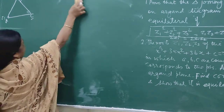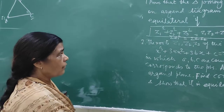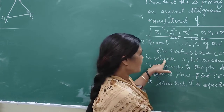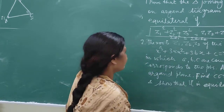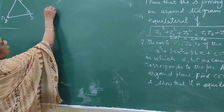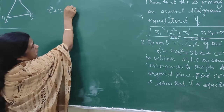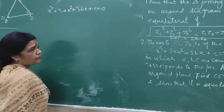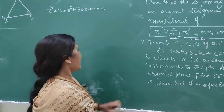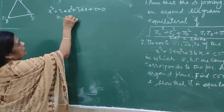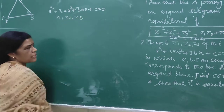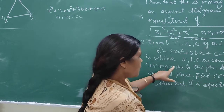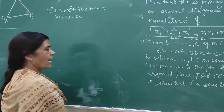The next problem is: the roots Z1, Z2, Z3 of the equation — where a, b, c are complex numbers — the equation is x³ plus 3ax² plus 3bx plus c equals 0. Z1, Z2, Z3 are the roots of this equation where a, b, c are complex numbers, corresponding to points on the Argand plane.